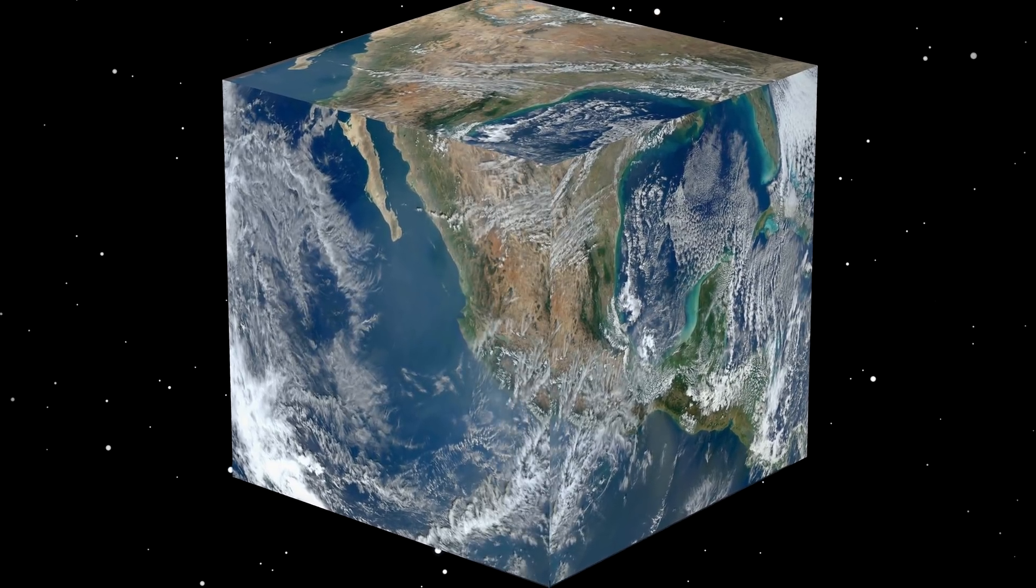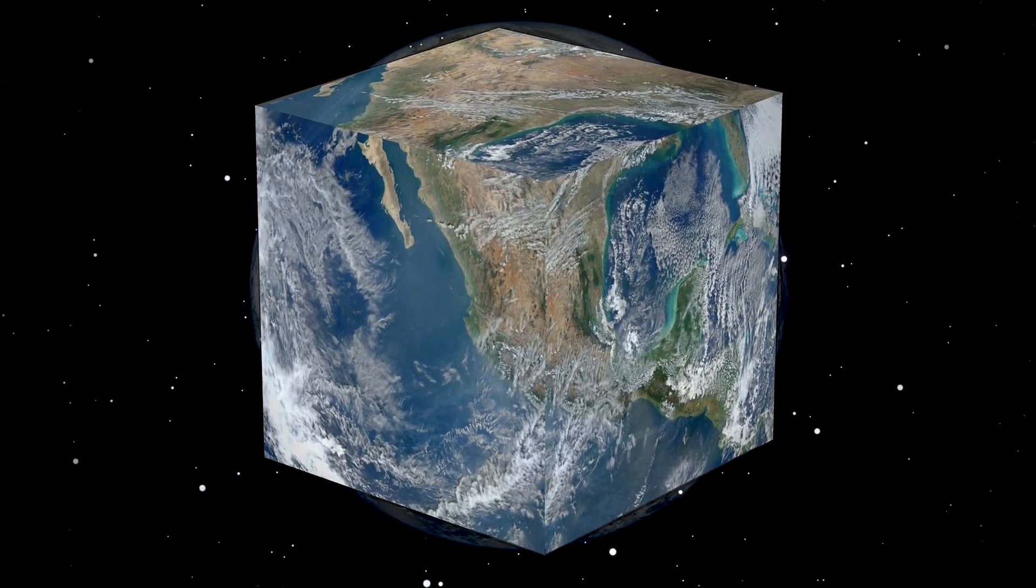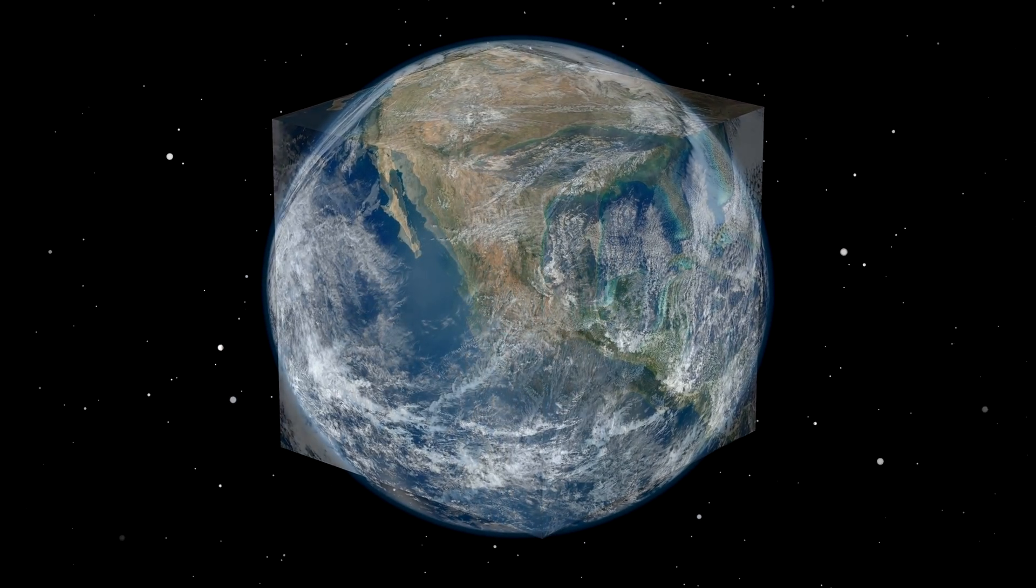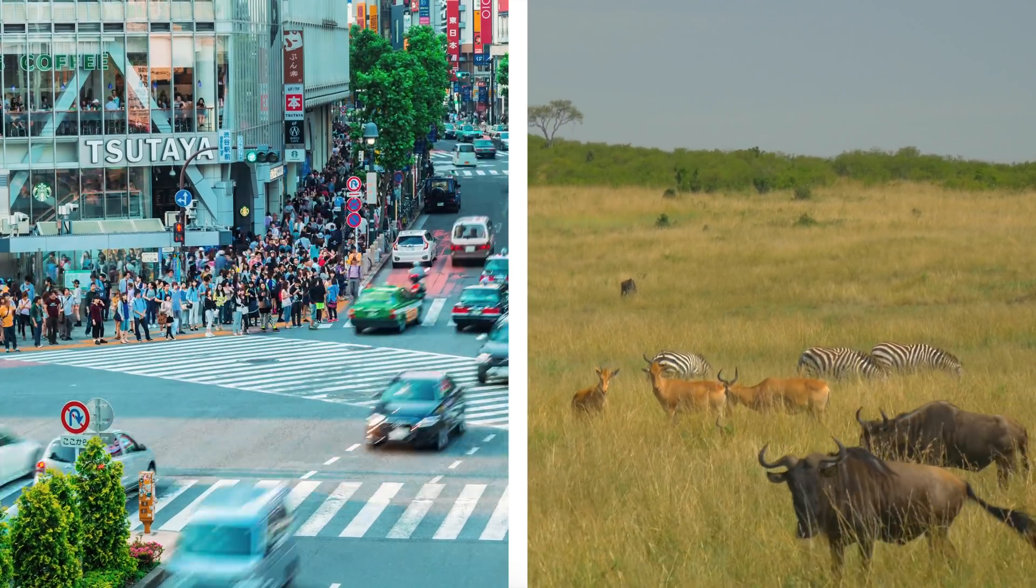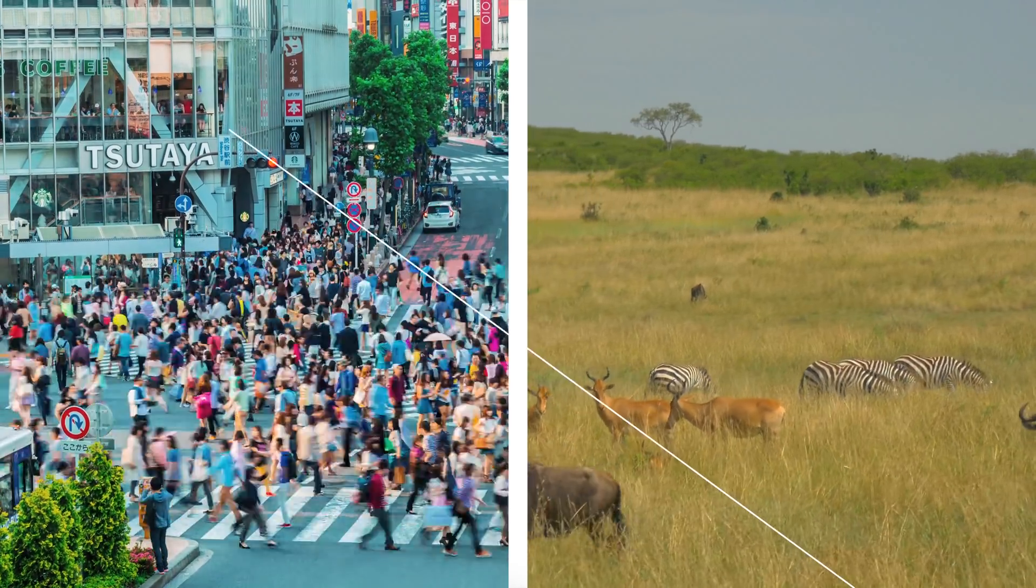But even if the Earth was a cube, it would eventually turn back into a sphere because of its own gravitational effect. Over time, the Earth would turn back into a sphere. There would also be major disruptions to human, animal, and plant life.